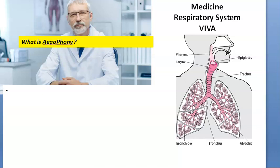What is egophony? Sir, egophony is a change in the vocal resonance — that is when you auscultate, there is change in vocal resonance with nasal connotation mimicking the bleating of a goat. There will be selective transmission of the high-pitched components of the sound. This is heard mostly in consolidation and fibrosis.